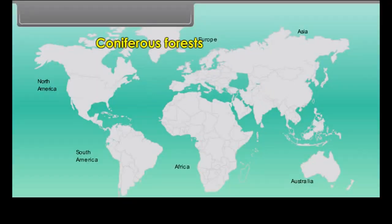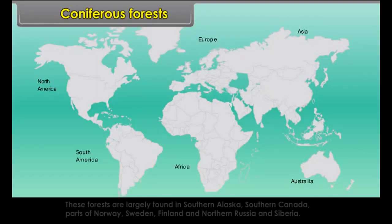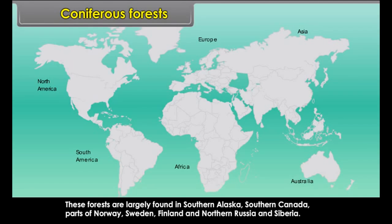Coniferous Forests. These forests are largely found in southern Alaska, southern Canada, parts of Norway, Sweden, Finland and northern Russia and Siberia.